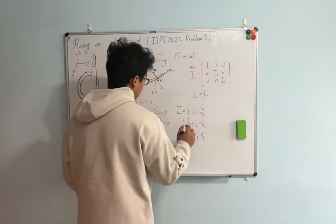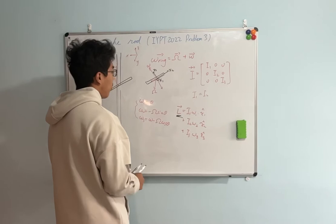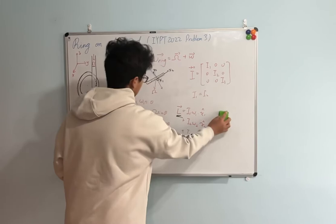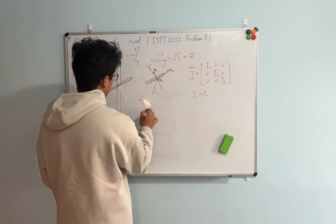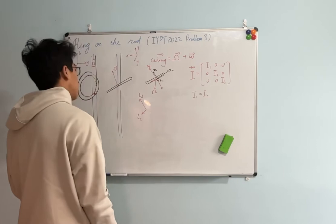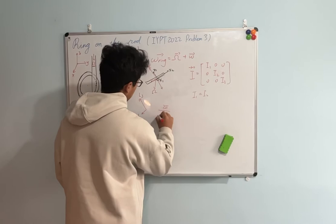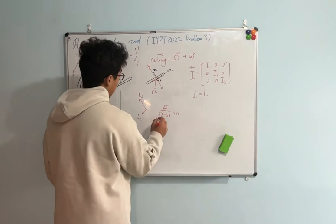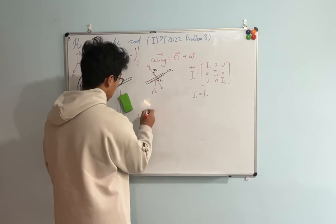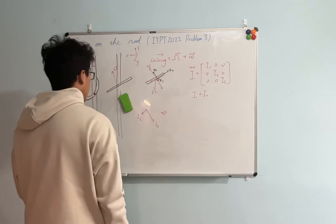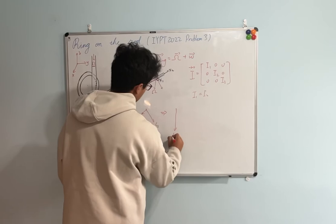We have the angular momentum of the ring and we can decompose it into the component on the vertical axis and the component on the horizontal axis. We now have an angular momentum component parallel to the third principal axis and a component opposite to the direction of x2. From the experiment we find that capital Ω is actually larger than the spinning angular velocity, so we consider L3 to be pointing downward.